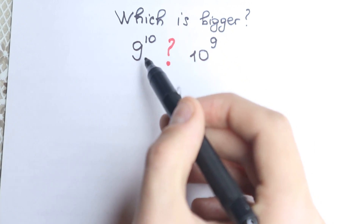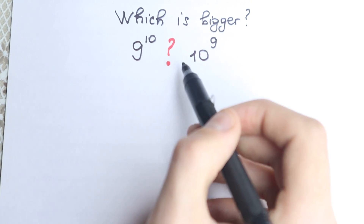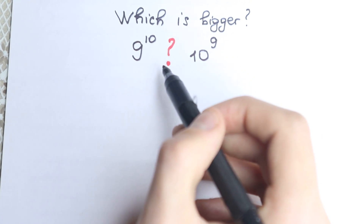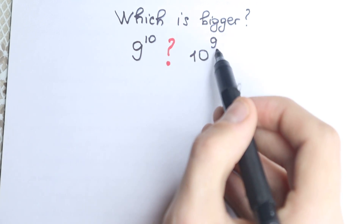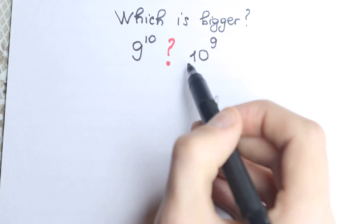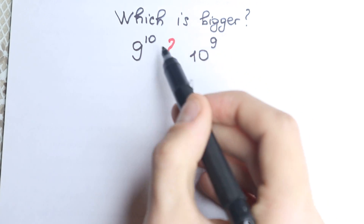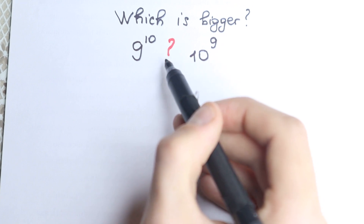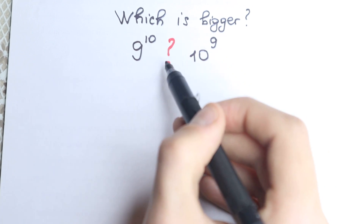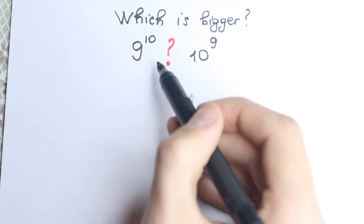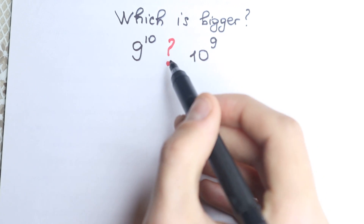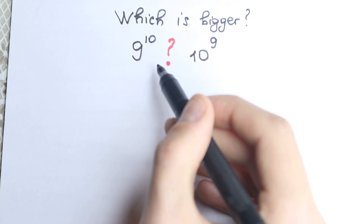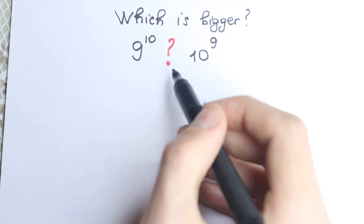On first sight it looks like similar numbers. On one side we have 9 as a base and 9 as a power; on the other we have 10 as a base and 10 as a power — it looks like maybe similar numbers. But these numbers are really different from each other, because they represent completely different values.